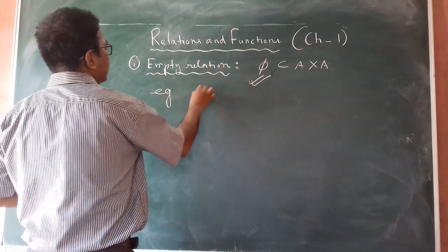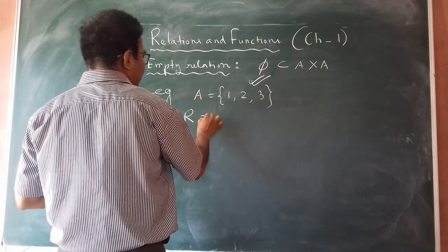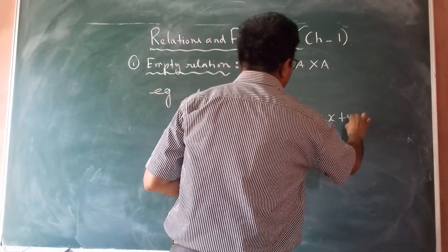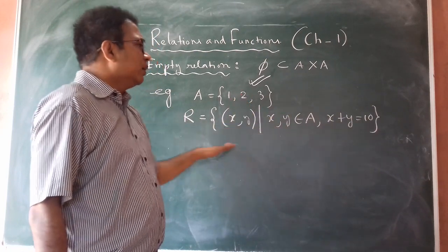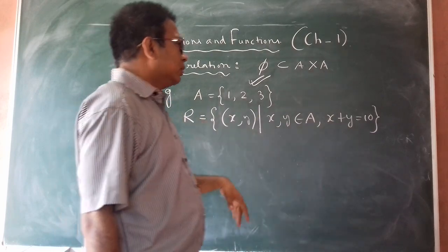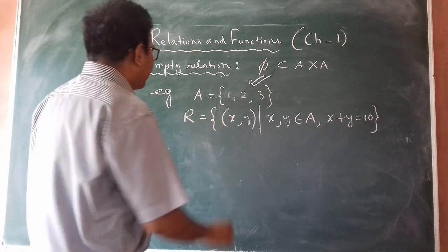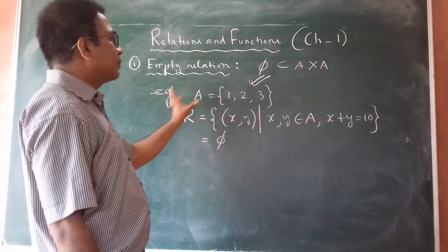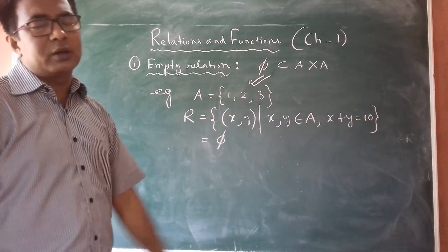Let us take one example. We consider a set A which contains the elements 1, 2, and 3. We define a relation R such that R equals the set of ordered pairs (x, y) where x, y belong to A and x plus y equals 10. We observe that the sum of any two elements of the set A will not give us 10, so we are not able to find any element satisfying the condition. Therefore R becomes the null set, which is a subset of A cross A. That is why R is known as an empty relation.